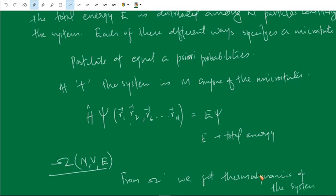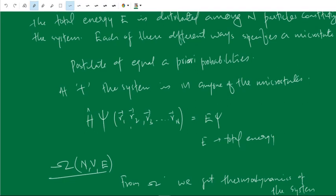This is the method of statistical mechanics. Ω is the number of microstates — for a single macrostate, there are Ω number of microstates. If we know this total number of microstates, we can find out all other thermodynamic quantities like total energy, pressure, and entropy. Our ultimate aim is to get the thermodynamics of the given system, so we first find out the total number of microstates Ω. In the next class onwards, we will discuss how Ω is connected with thermodynamics.